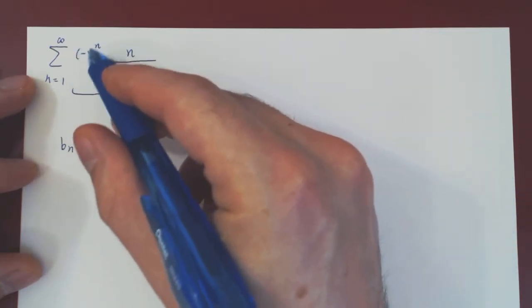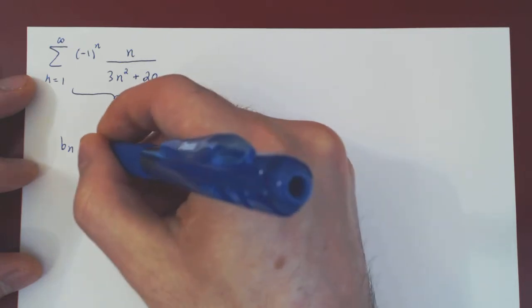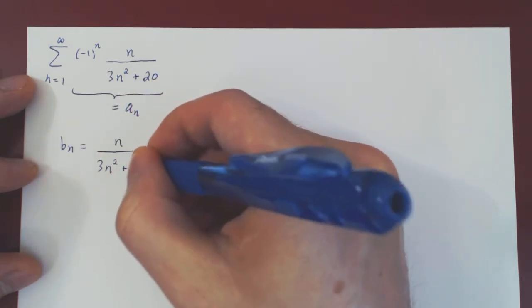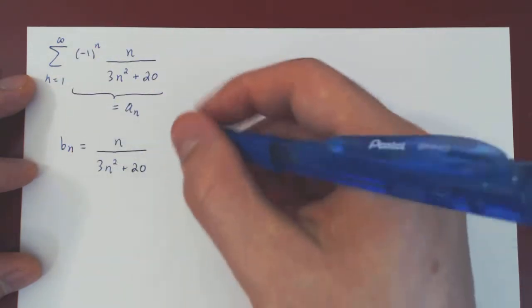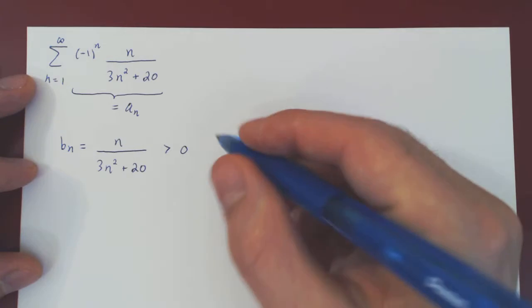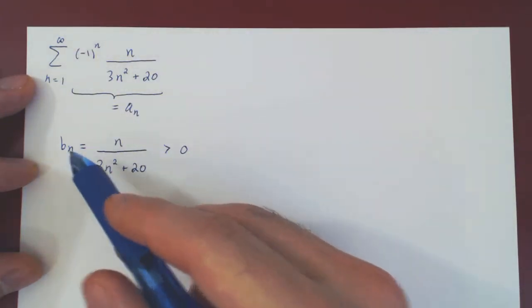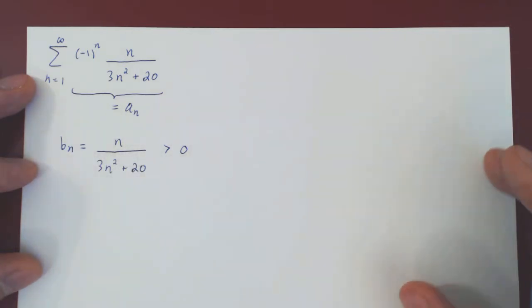So bn is n over 3n squared plus 20. As n goes from 1 to infinity, bn is clearly always positive. And if we are to have a convergent series, we have to prove that bn is eventually decreasing, and bn converges to 0 as n goes to infinity.